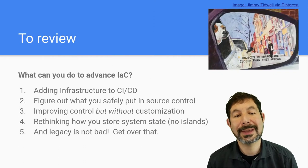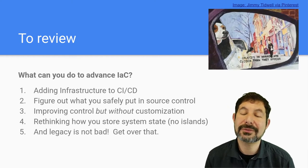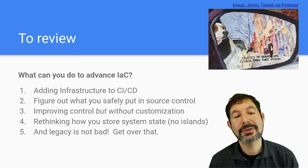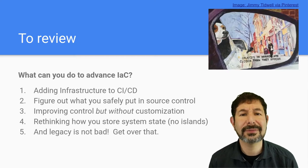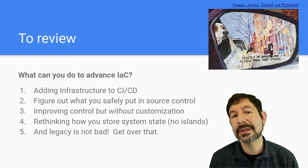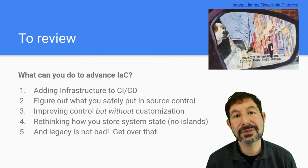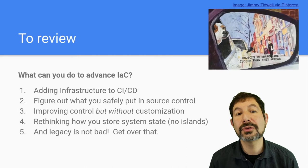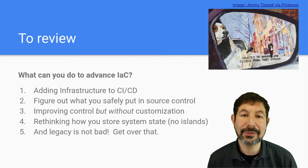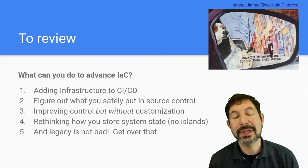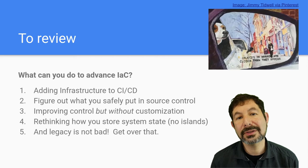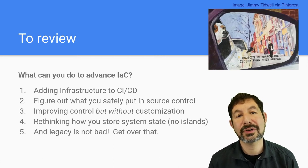That's the value of infrastructure as code — implementing this in your own environment. Whatever platform you choose, the goals of building a standard process that's modular and reusable is an important component. So let's review: first, look at ways of adding infrastructure to the CI/CD pipelines you already have. Figure out what you can safely put in source control — eventually everything is the right answer, but start with what can be done reasonably. Get review processes and pull requests so other people are watching the code. Look at how you can improve control in your systems and avoid customization — if you're writing stuff unique to you, you're not advancing as quickly down the infrastructure as code path.